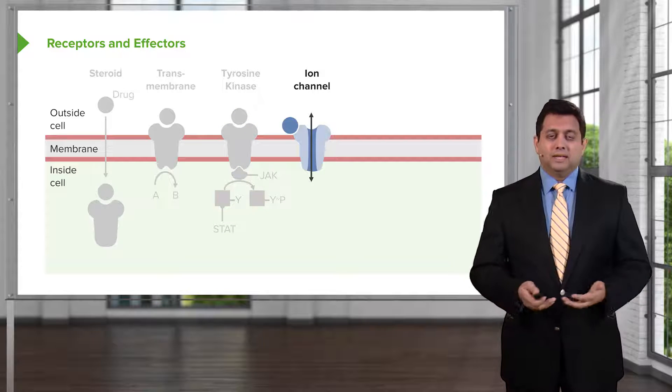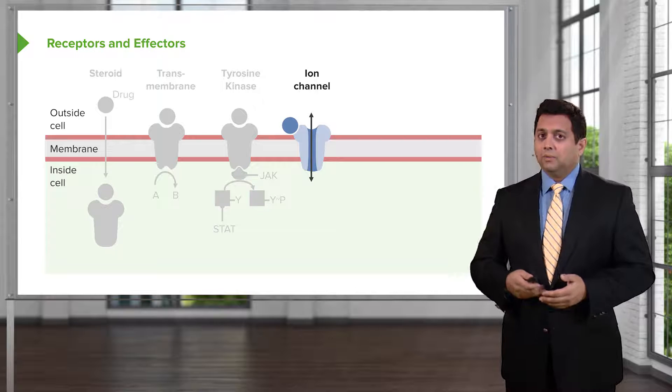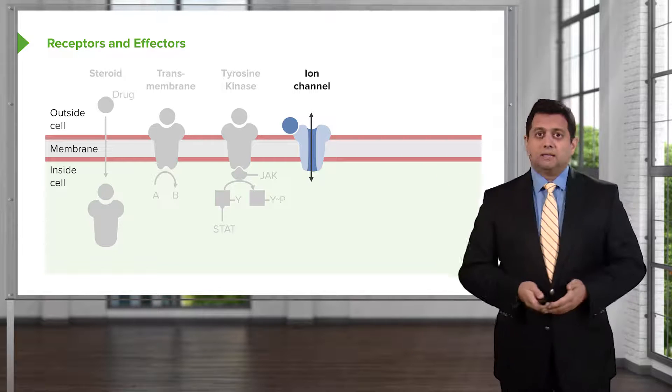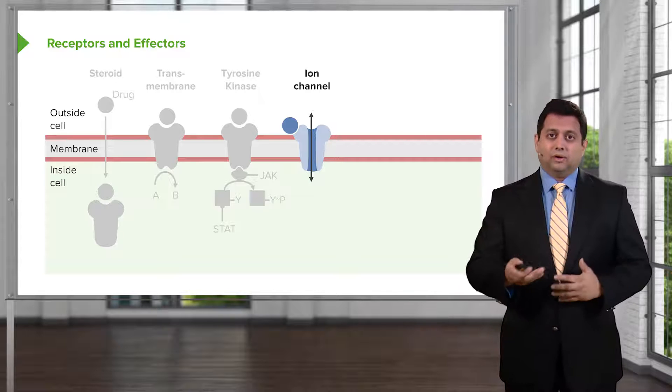An ion channel is a very common type of receptor-effector combination where a drug might bind to a site on the ion channel and cause a flow of something in or out of the cell.